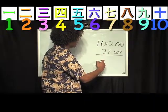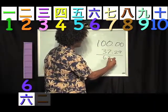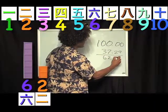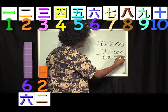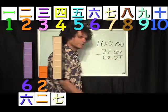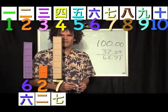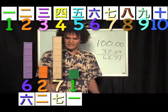What does this need to be to make 9? 6. 2. 7. And this needs to be a 10. Done. That fast. That easy.